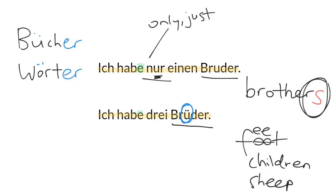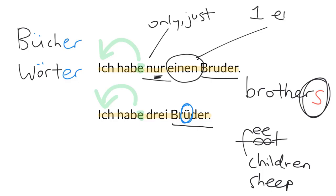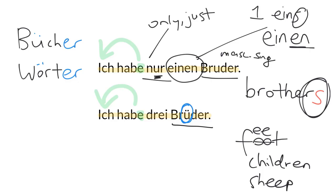We have an E on the verb Haber because of the subject Ich. And the word Einen is interesting — the number one is Eins, but if you put the number one before a noun, you lose the S and get a particular ending. In this case, we have an En ending because the word Bruder is masculine — masculine, singular, and accusative, meaning it's the direct object of the verb Haber.